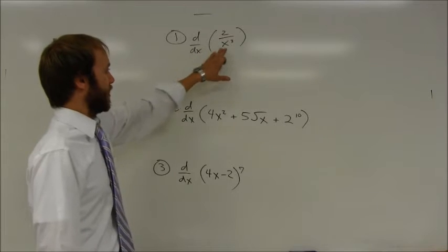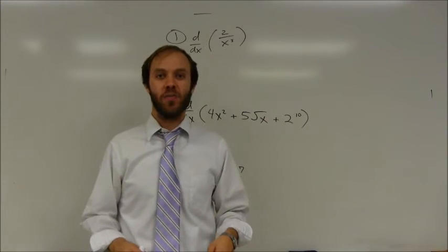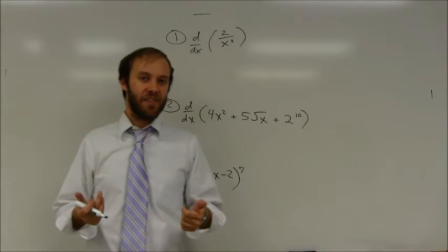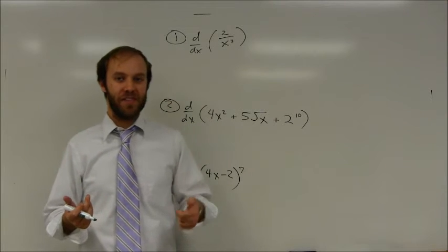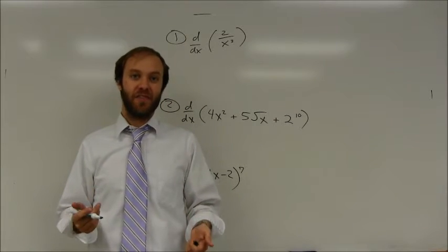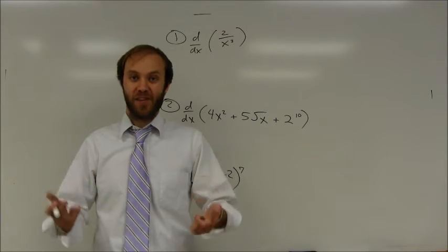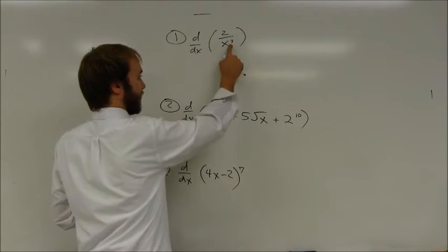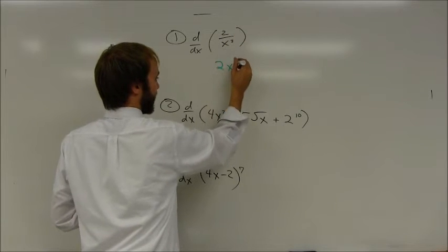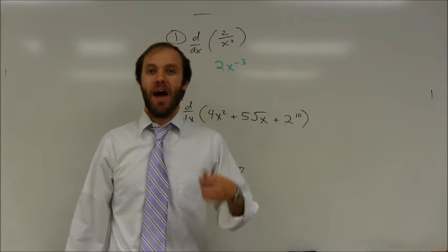First one — basic derivative. You're just finding the derivative of 2 over x cubed. Remember that we haven't discussed how to find a derivative if you have a variable in the denominator of a fraction. You're going to need to rewrite this using exponents. If I move this to the top, I end up with 2x to the negative third. Now I can apply the power rule.